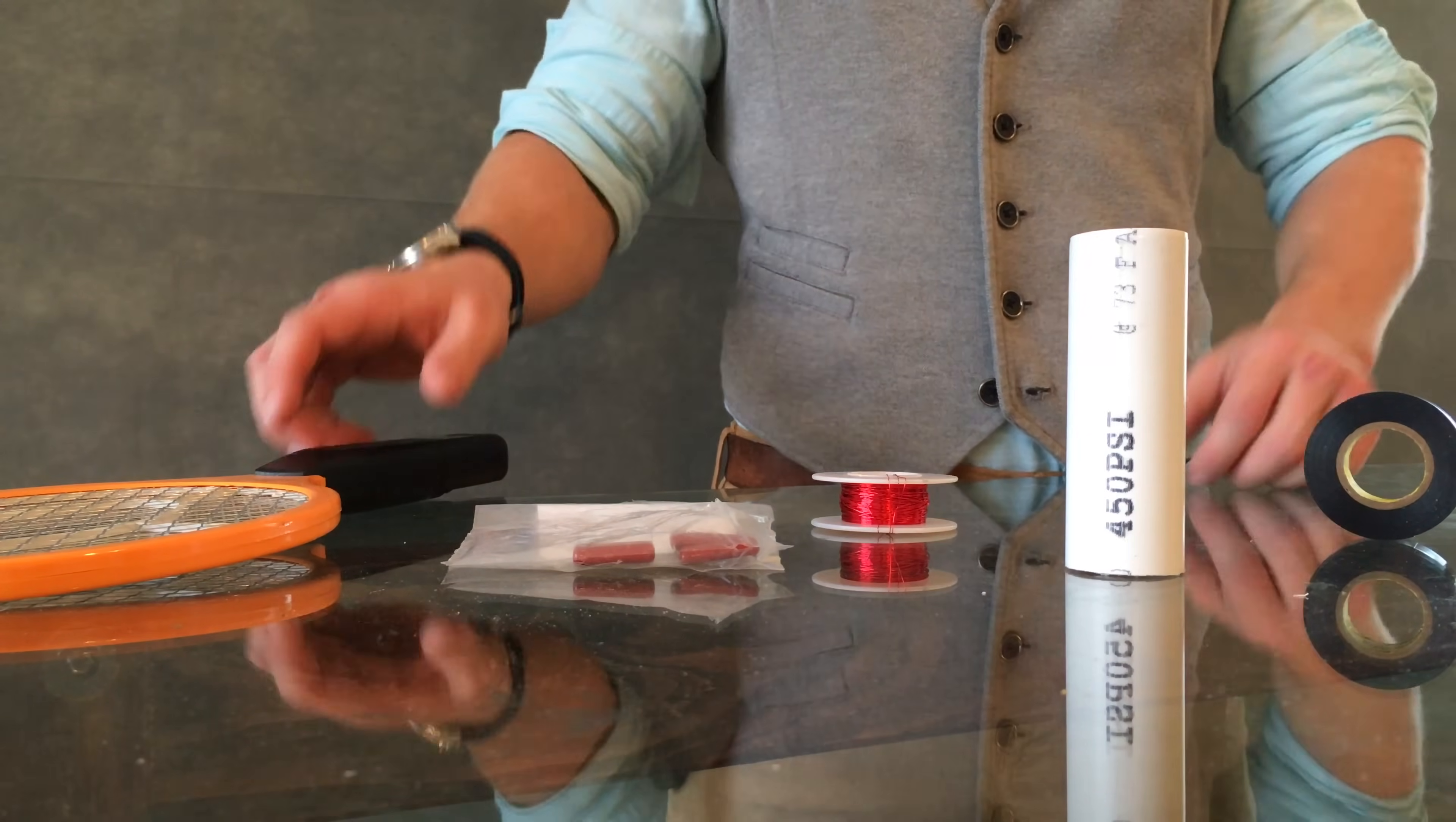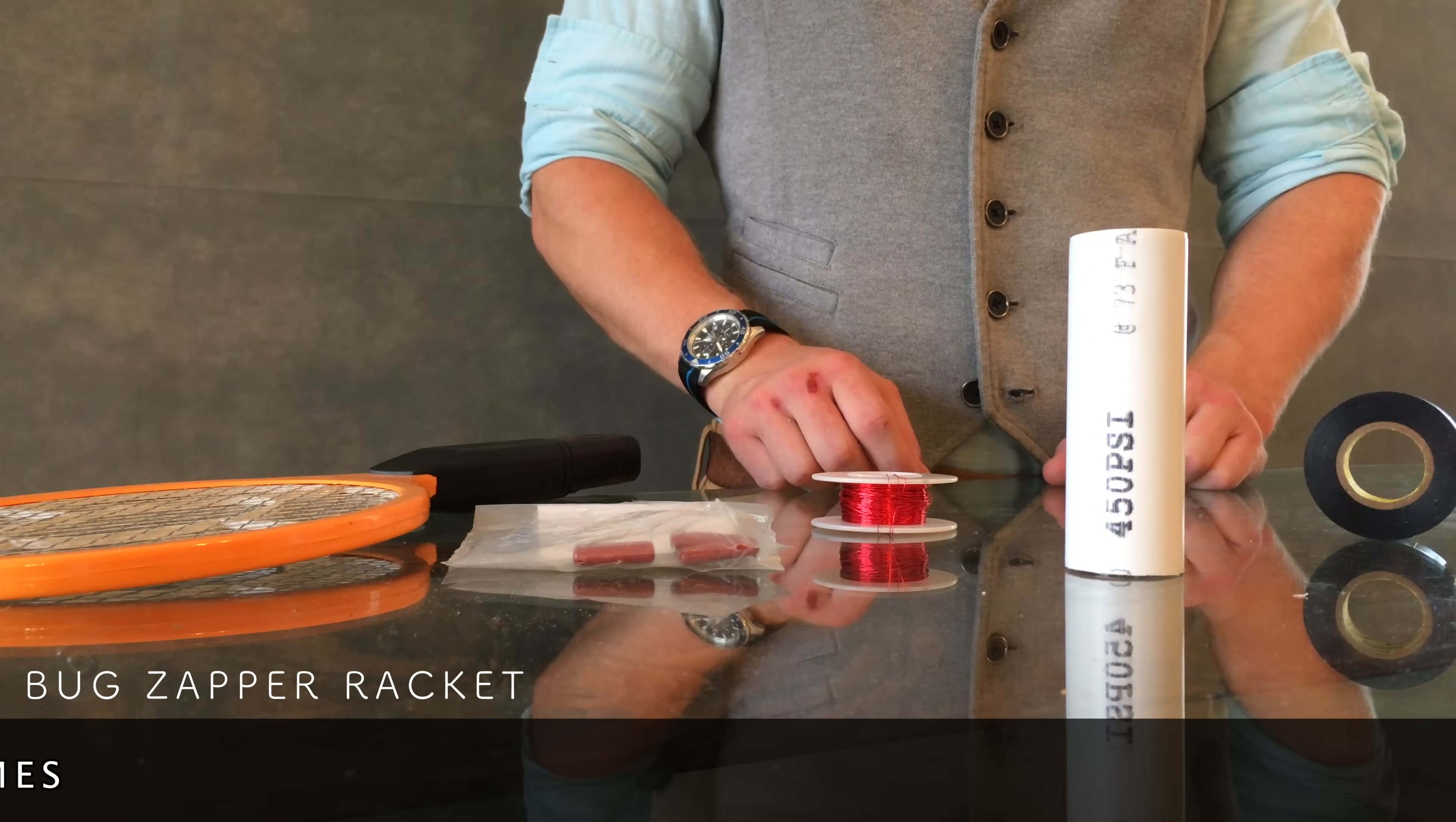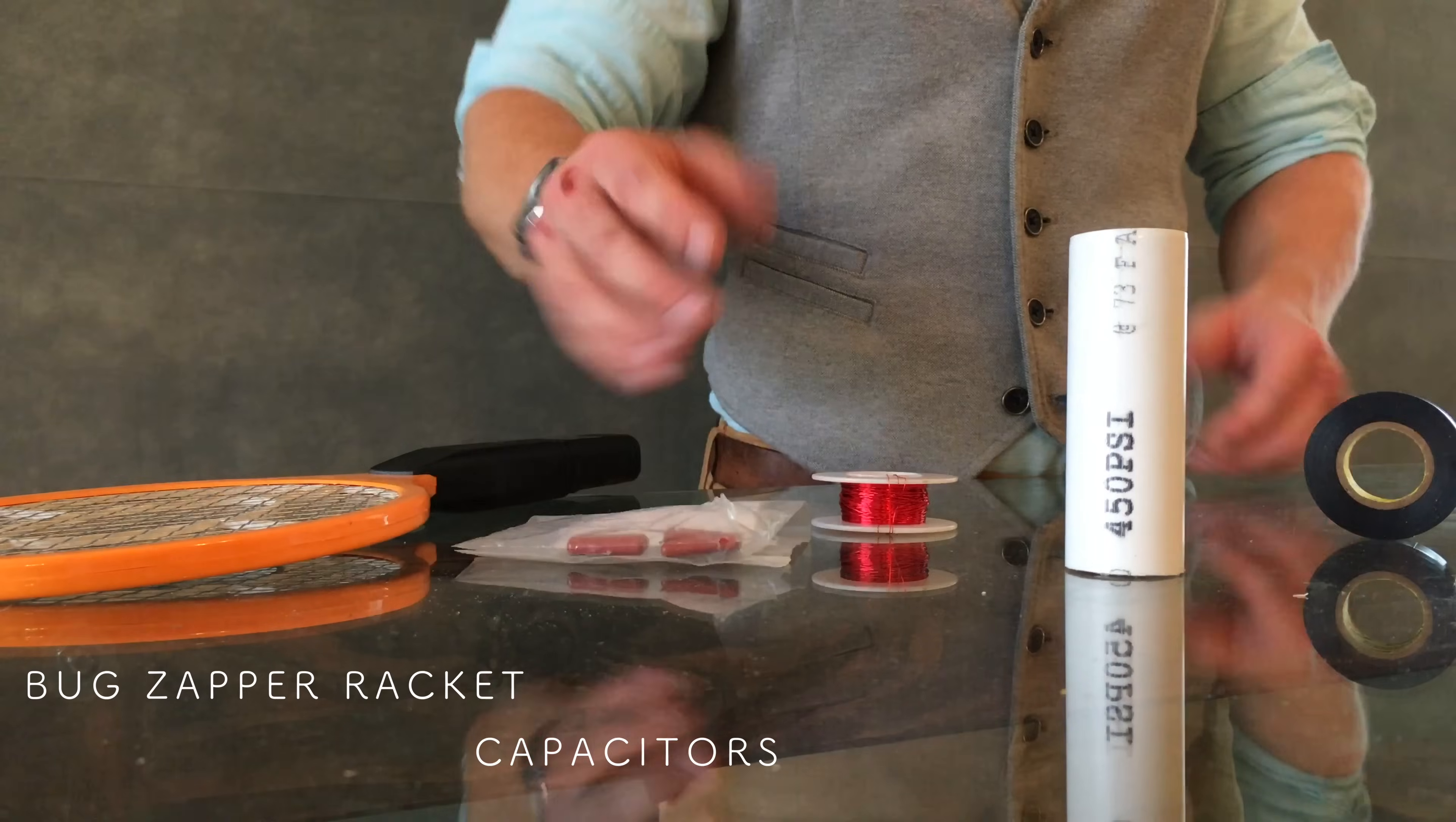First gather your supplies. We're going to need a bug zapper racket which you can get at home improvement stores which effectively is our power source. It also contains a capacitor inside we can use but I recommend buying your own polypropylene capacitors. They're more efficient.